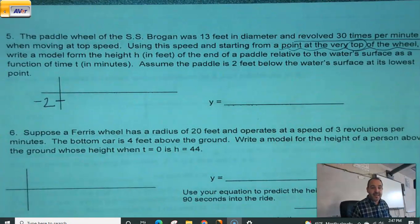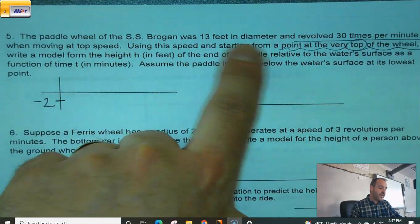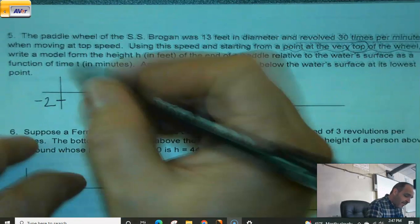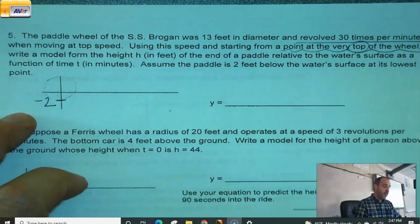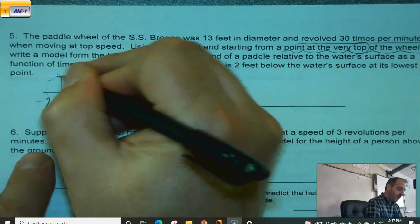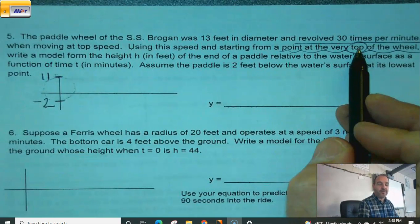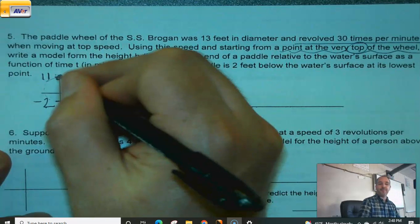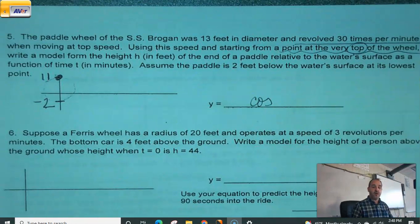So using the speed and starting from a point at the very top of the wheel, write a model for height, H, end of the paddle relative to the water's surface as a function of time in minutes. Okay. Lots of things to take into consideration here. If I finish reading, assume the paddle is 2 feet below the water's surface at its lowest point. Okay. Well, that's good to know. So my min is going to be at negative 2. How can I figure out my max if they didn't tell me? If this wheel is 13 feet in diameter, okay, and the bottom, I'm just going to do this super light because this isn't actually part of my graph. So here's my wheel. The bottom's here. It's 13 feet to get to the top of the wheel. Negative 2 plus 13 would put my max at 11. Ooh, that was kind of funky. Okay. To deal with.